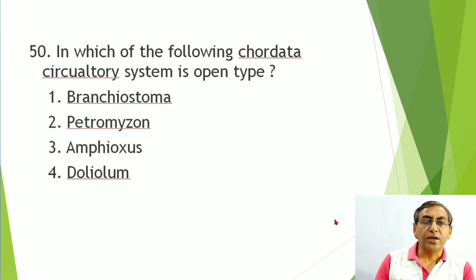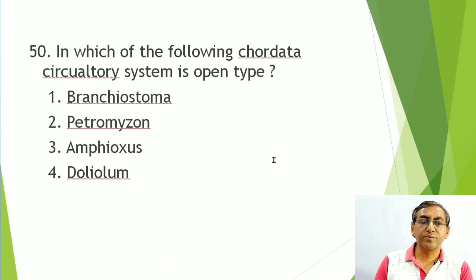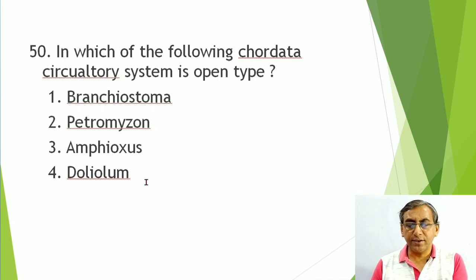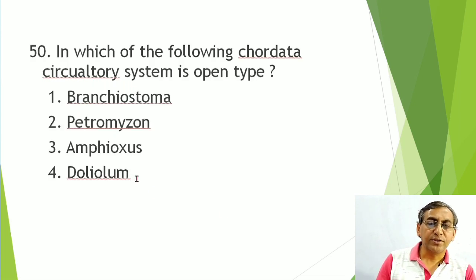Question: In which chordate is the circulatory system open type? In all chordates, the circulatory system is closed except Urochordata, which has open circulation. Examples of Urochordata: Doliolum, Salpa, Ascidia. Answer: Doliolum. Note: Amphioxus is Cephalochordata, also known as Branchiostoma.